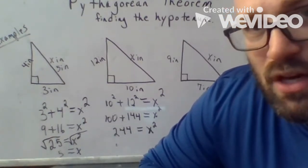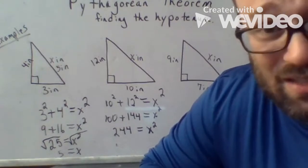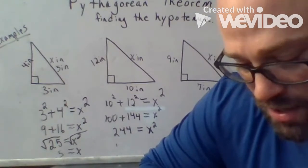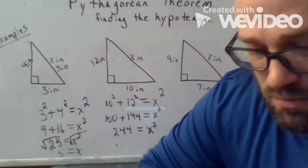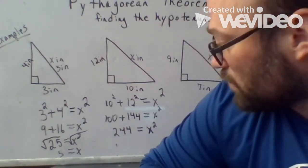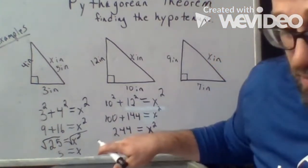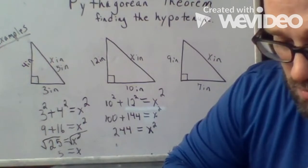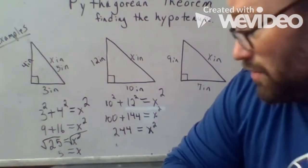So like 14 squared is 196. And 15 squared is 225. So a little bit bigger than 15 squared. It's 244. So 16 squared would be 256. So it's in between 15 and 16.